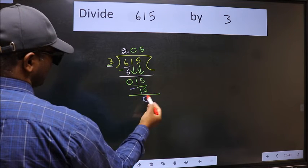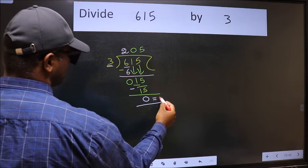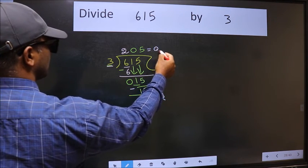No more numbers to bring down. So we stop here. This is our remainder and this is our quotient.